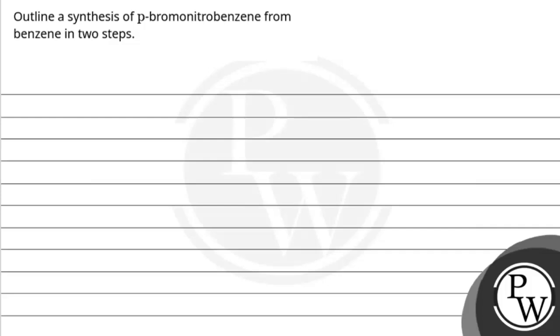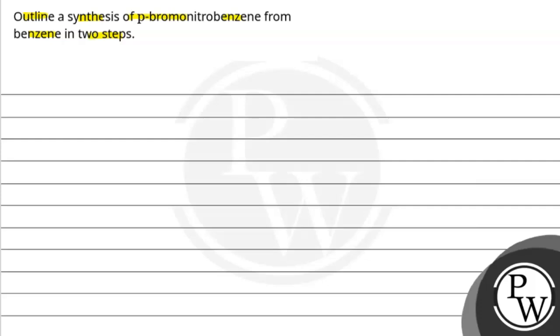Hello guys. I answered this question. The question is: outline a synthesis of para-bromo-nitrobenzene from benzene in two steps. So here we have to tell the synthesis of para-bromo-nitrobenzene.